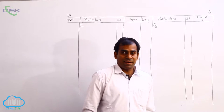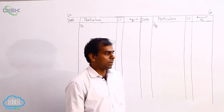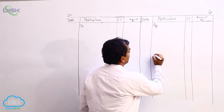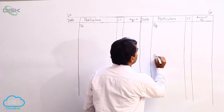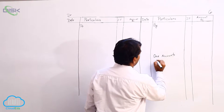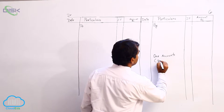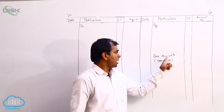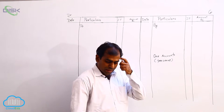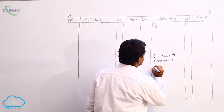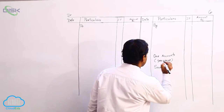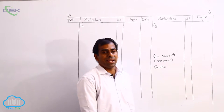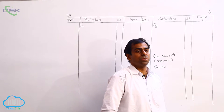Once again, let us quickly recapitulate what we have discussed previously. We are preparing only one account. These accounts, as per your syllabus, are only personal accounts. Most of the problems are expecting you to prepare only one account, that is the personal account of the person. In this problem, you are preparing that of Sudha. Whenever you are preparing personal accounts with their names, usually they are related to the people from whom you buy the goods or to whom you sell the goods.